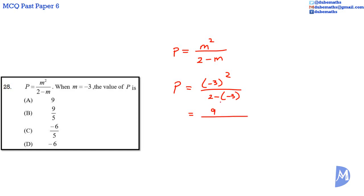2 minus negative 3 is the same as 2 added to a number with the sign reversed, so it's 2 added to positive 3. 2 added to positive 3 is equal to 5. So we get 9 over 5. The answer is B.